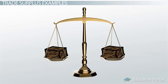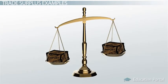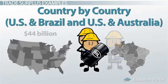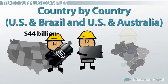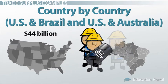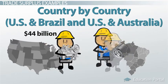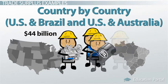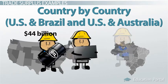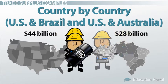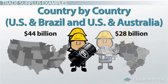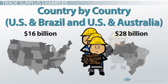Now some examples about trade surpluses. In 2013, the United States exported over $44 billion worth of goods such as engines, oil, aircraft, and electronic equipment to Brazil alone. The US imported or purchased $28 billion worth of goods. This led to a trade surplus with Brazil of $16 billion.